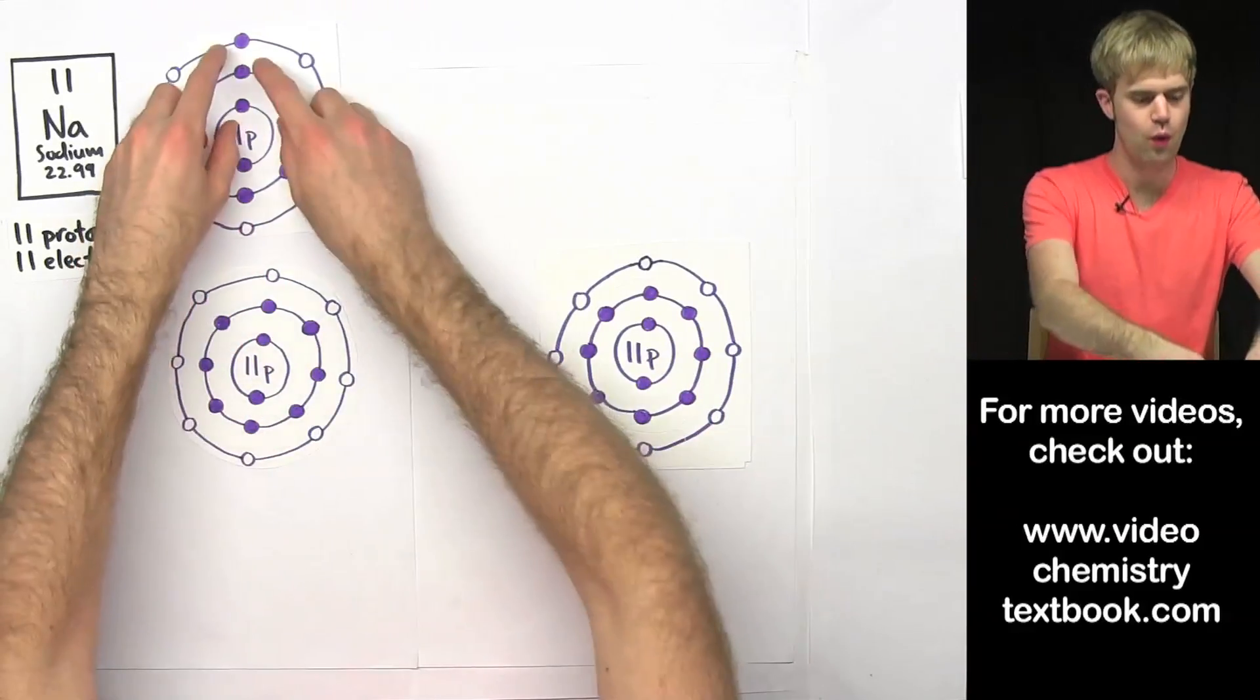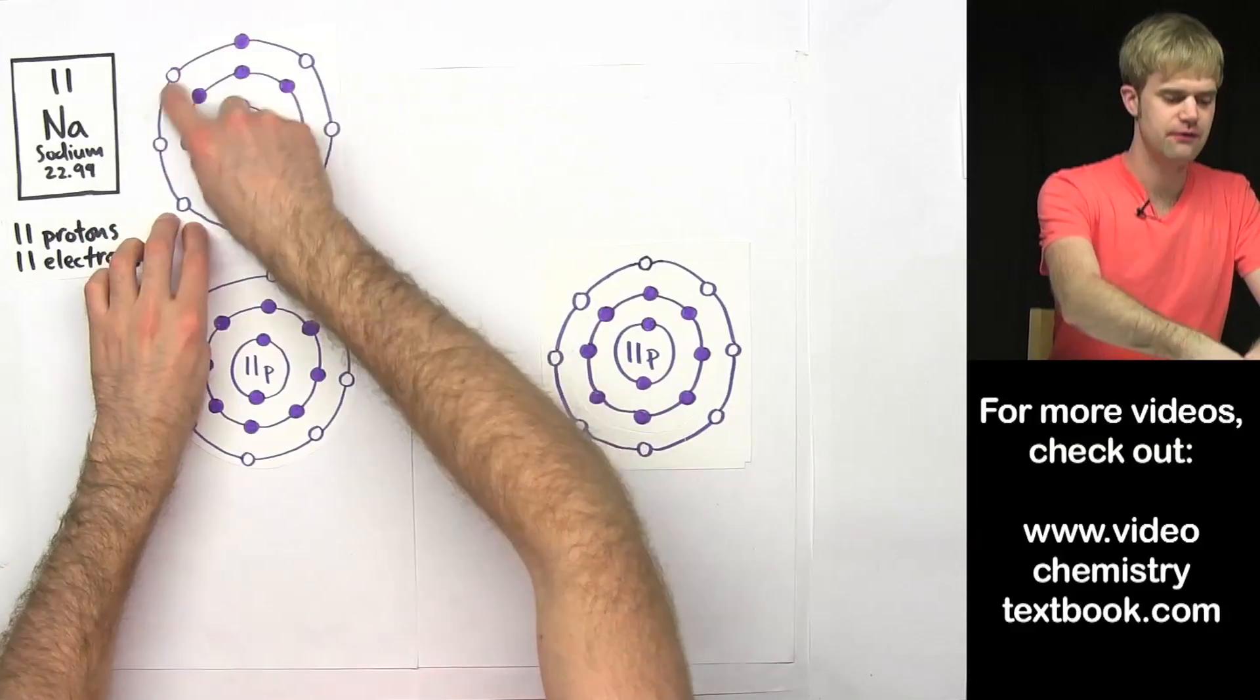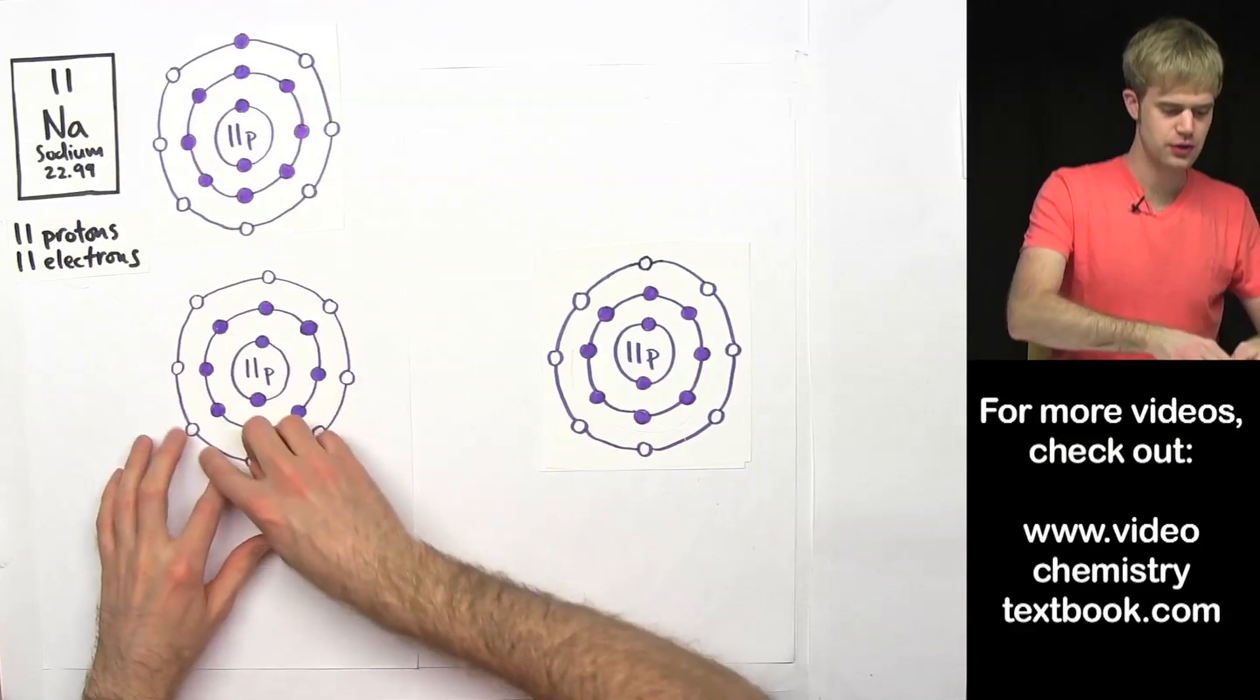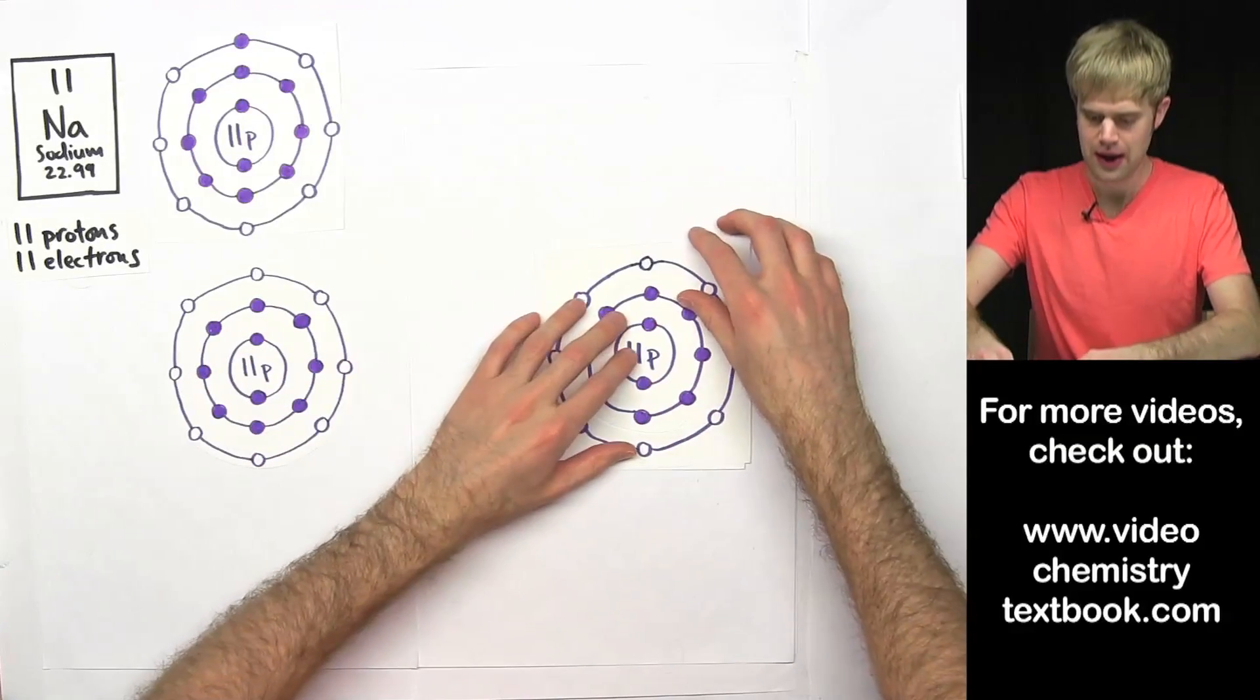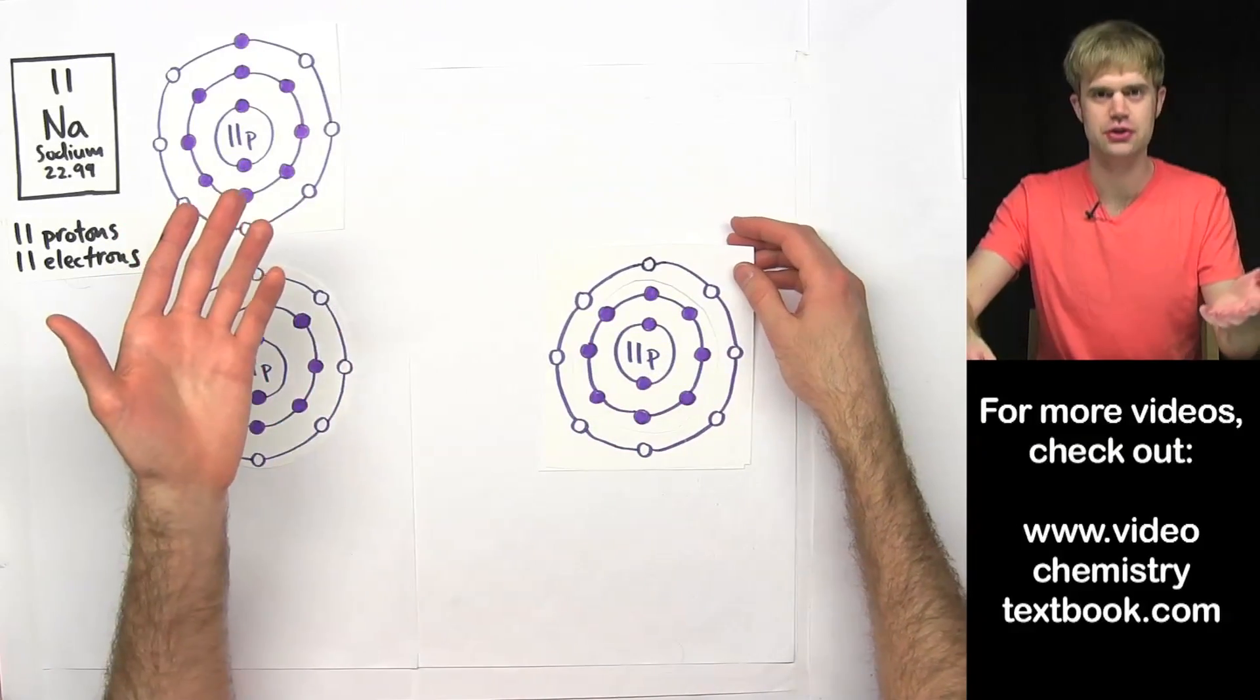Sometimes people say, okay, when you empty this valence energy level out, so there are no more electrons in it, it's not a valence energy level anymore, and they say, what happens to it?